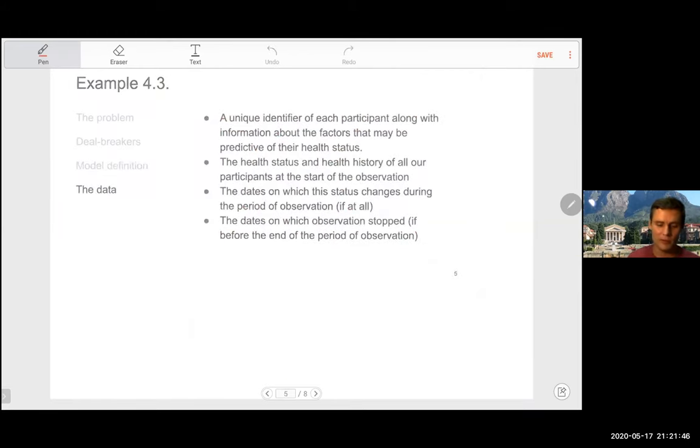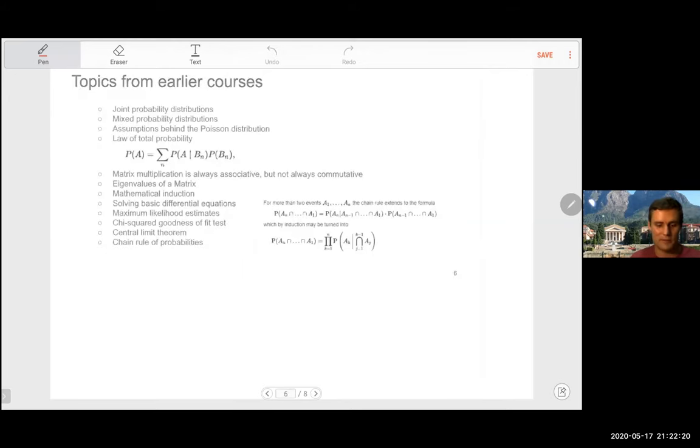You can pause the video to read this. This is just a description of the kinds of data that I intuitively would think I would need to be able to estimate the parameters of this model. Again, once we've got a formal definition of a model, we'll be able to specify our formal likelihood function. Therefore, the data that we need to formally calculate the maximum likelihood estimates for our model. But here's just a starting intuitive stab at what data we'll need to parameterize this model.